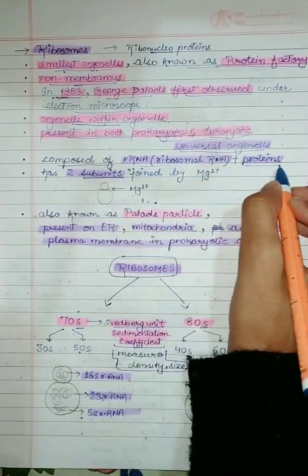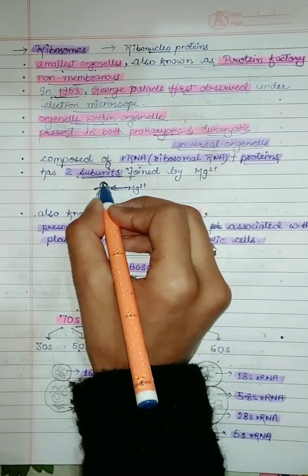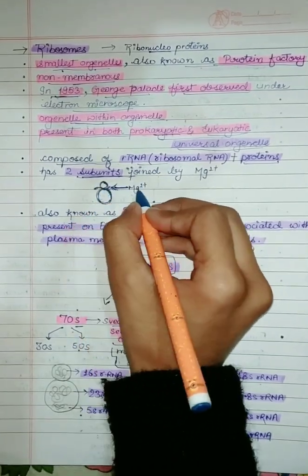It is composed of rRNA and protein and it has two subunits: smaller subunit and larger subunit. These two subunits are connected by magnesium ions.